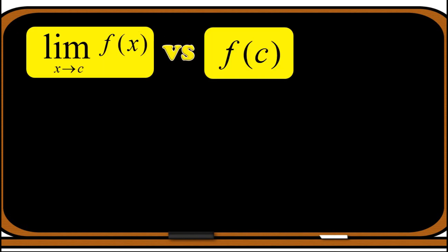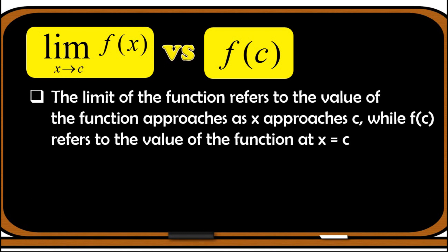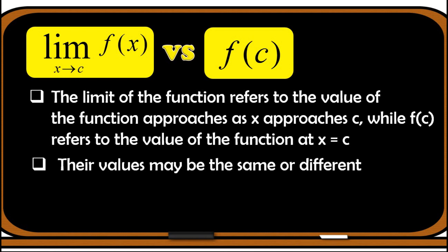This time, let us talk about the difference of the limit of a function as x approaches c and f of c. When we say limit of the function, it refers to the value the function approaches as x approaches c. When we say f of c, it refers to the value of the function at x equals c. In limits, it is very important to understand that these two may have the same or different values.